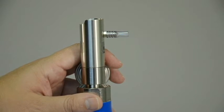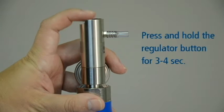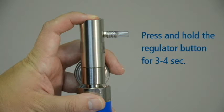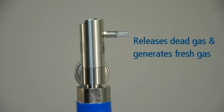Before performing the calibration, it is important to purge the regulator. This is done by pressing and holding the button or valve on the regulator for 3-4 seconds. Purging the regulator releases any dead gas that may be present in the regulator and generates fresh gas for the purpose of the calibration.